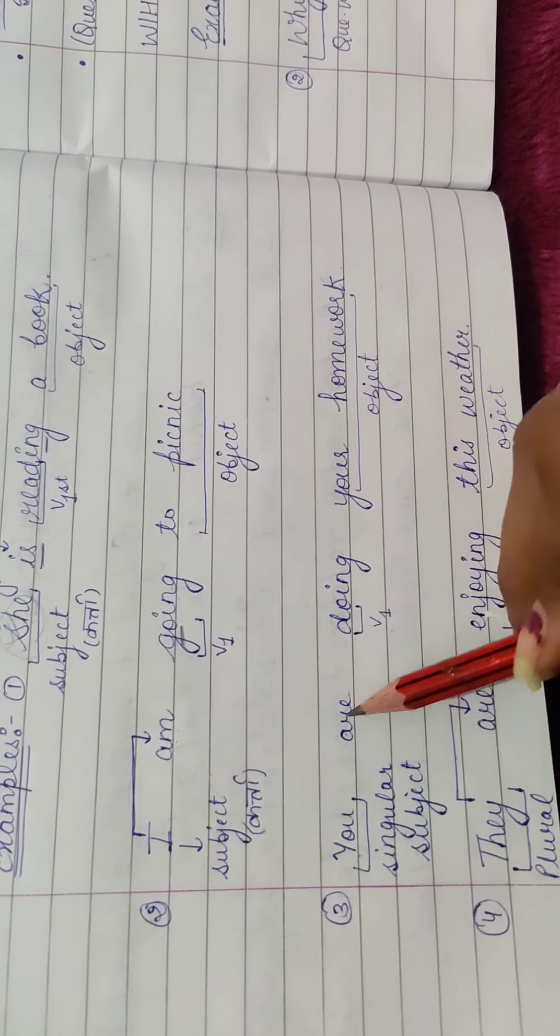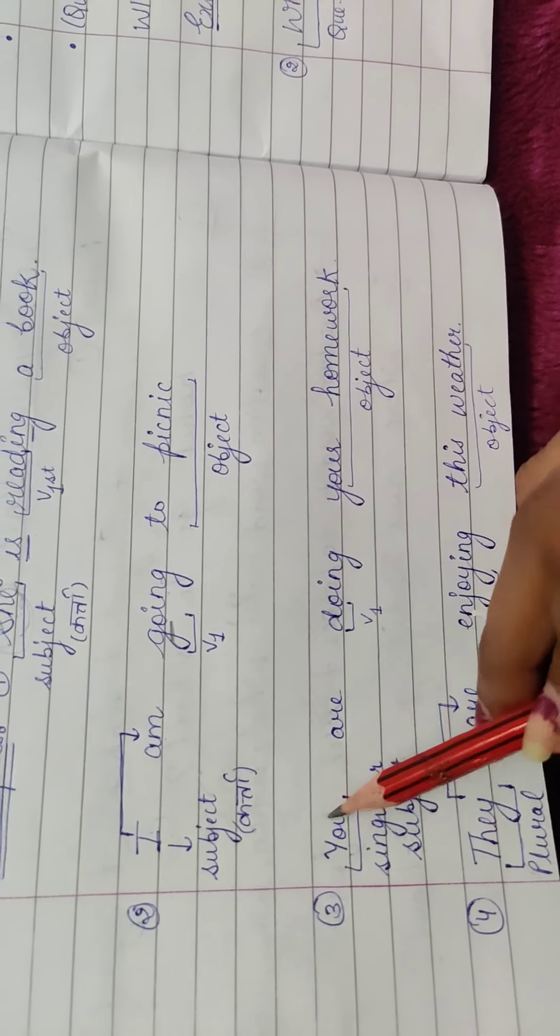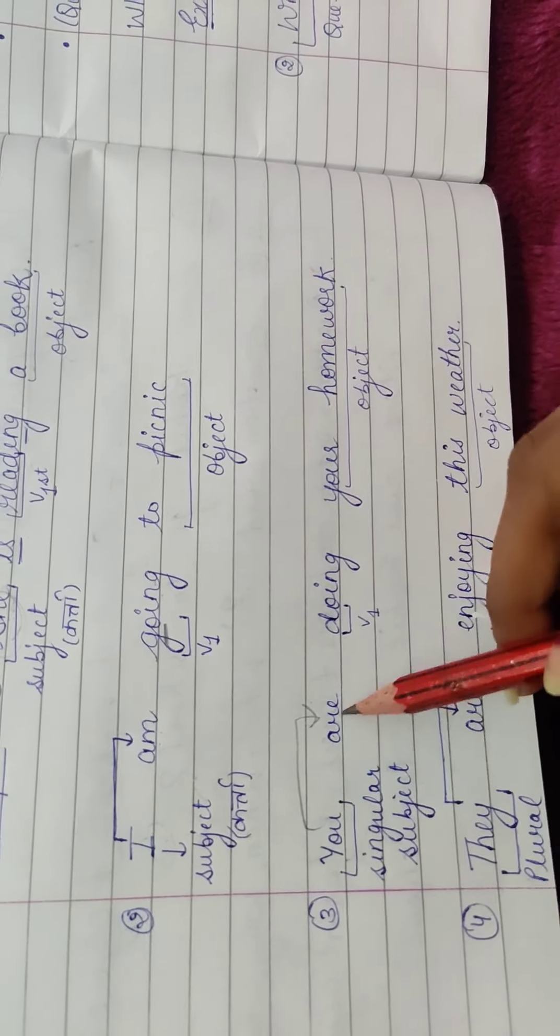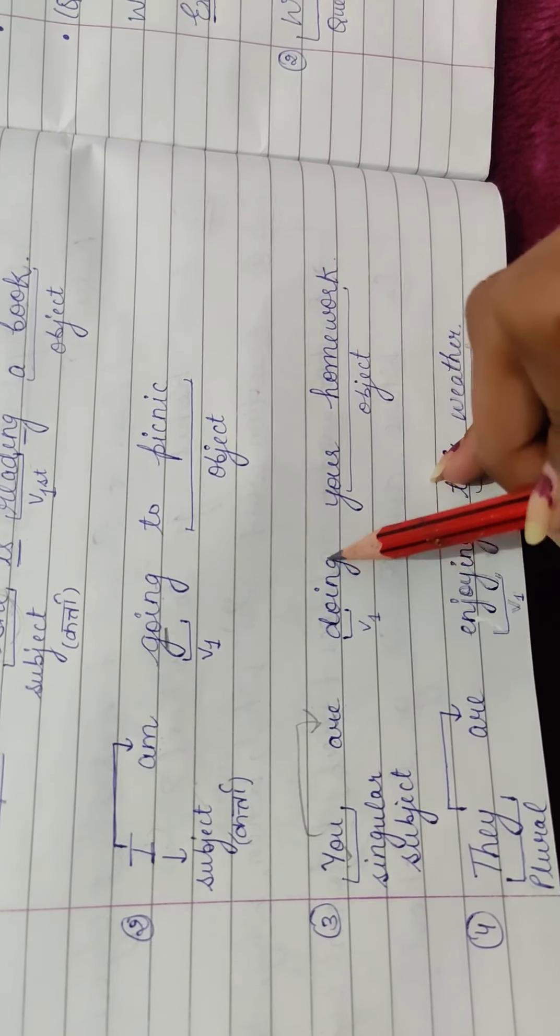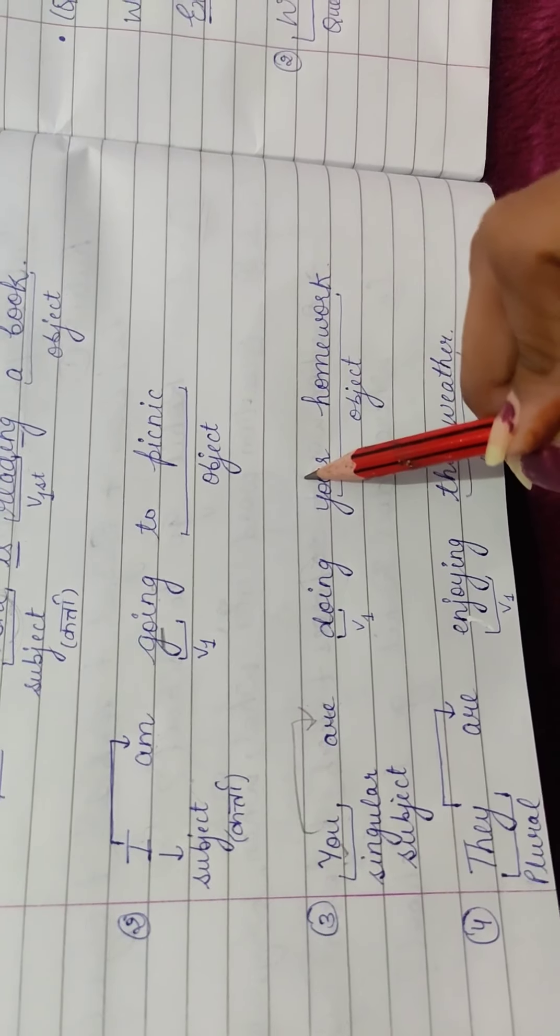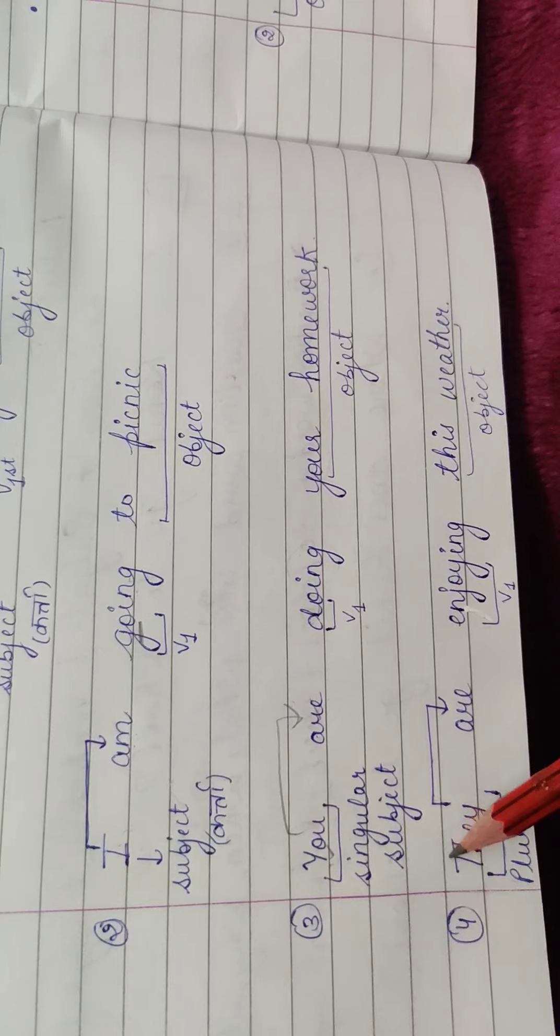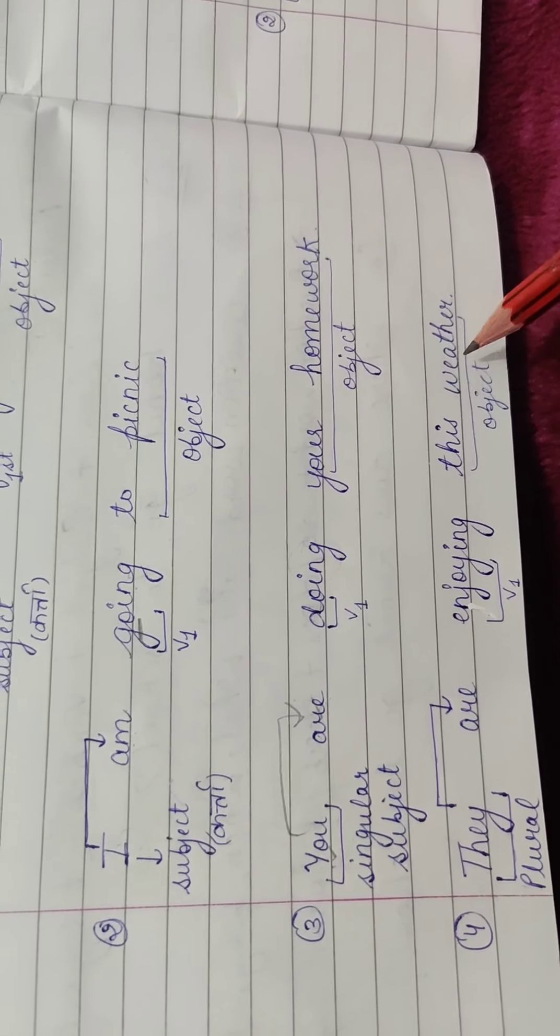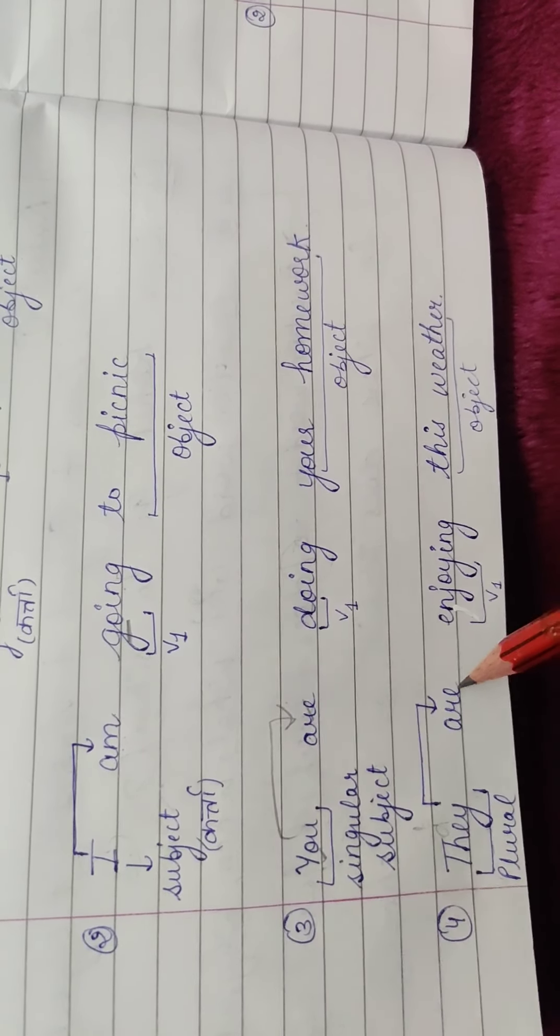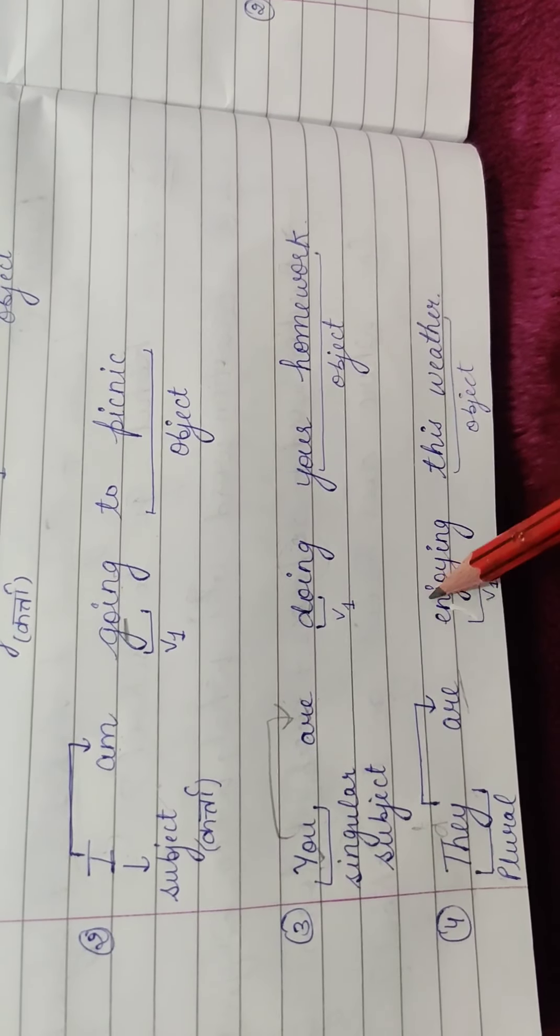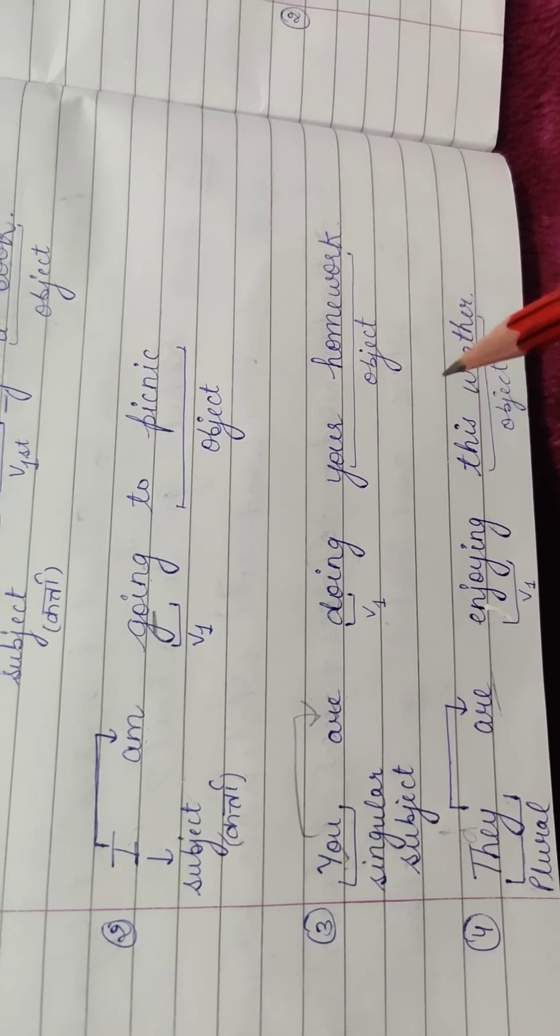Phir maine bataya tha, you ke saath humesha are aata hai, third person are aata hai, bhale aapko singular subject hai, lekin us ke baad bhi, us ke saath humesha you ke saath are aata hai. To you are doing your homework. Phir plural ke saath, maine are bataya tha. They - ve kya karaye, is moosam ko enjoy kar raha hai. To ve, aapka plural hoga ya, plural ke saath are aata hai. Phir subject enjoy hoga ya, us ke saath ing laga hai, phir aapka object aagya. To is tari ki se sentence form hotte hai.